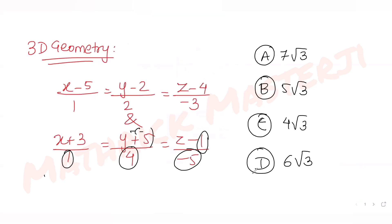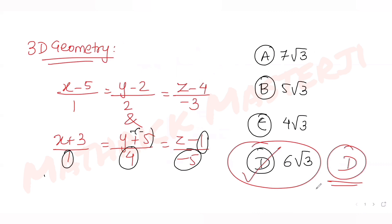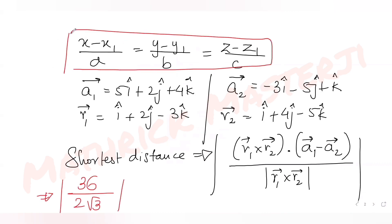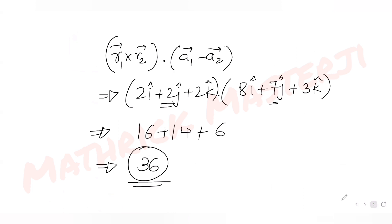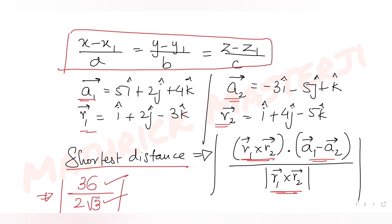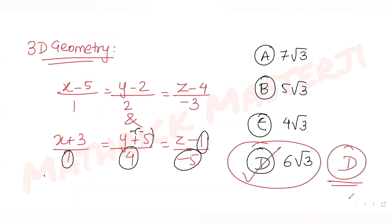Looking at the answer choices, the answer 6√3 matches option D, so D is the correct answer. To recap: compare the line equations with the general form to get vectors a1, a2, r1, and r2. Then use the formula — mod of (r1 × r2) dotted with (a2 − a1), divided by mod of (r1 × r2) — to find the shortest distance.